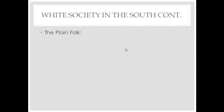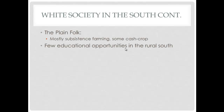The plain folk were individuals in the South mostly doing subsistence farming — growing enough just to live off themselves — with any extra land used for cash crop farming. There were very few educational opportunities in the rural South, largely because the region was so spread out and transportation couldn't unite people on a daily basis.